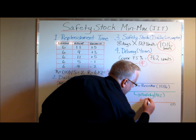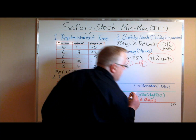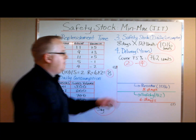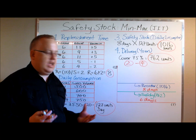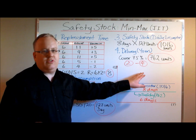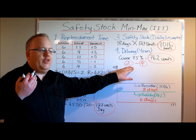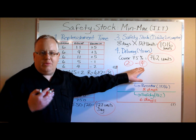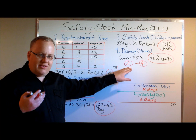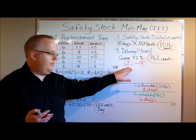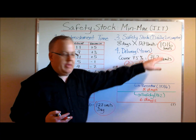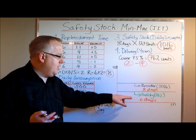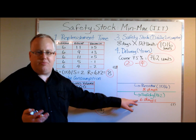762 units equates to six days of coverage, whereas the full 1,016 units covers eight days. If you have flexibility in your delivery times to customers, you can use it to your advantage. If you're guaranteed to deliver within two days, tell your customer four days — it allows you to save on inventory by not having to cover the full amount, since you only need to cover six days instead of eight. You've got two days to play with.